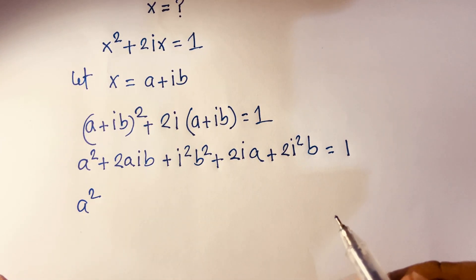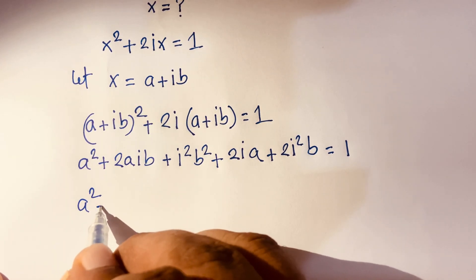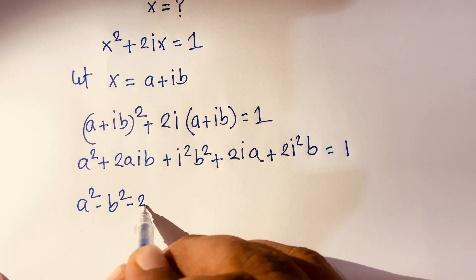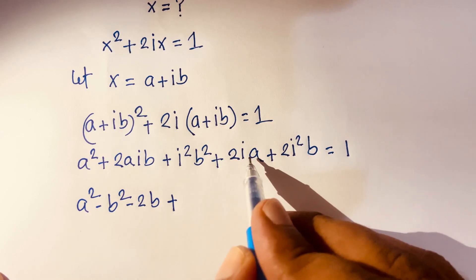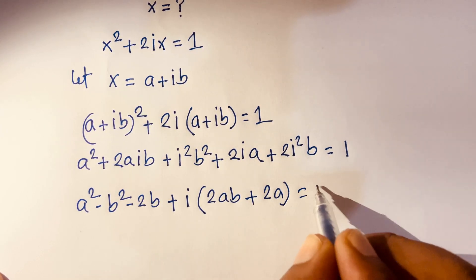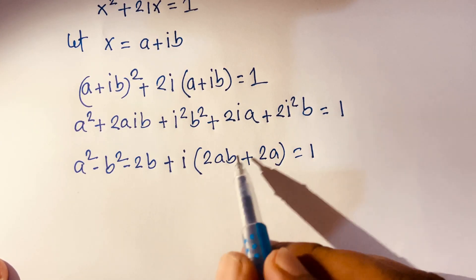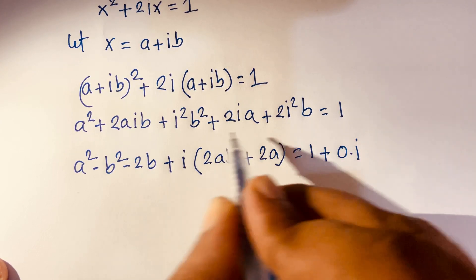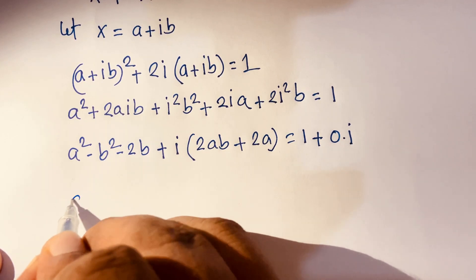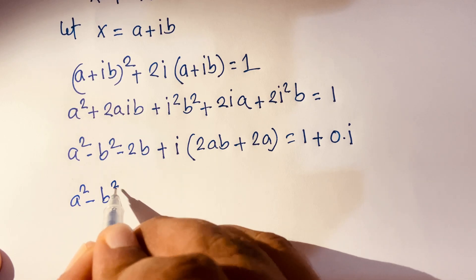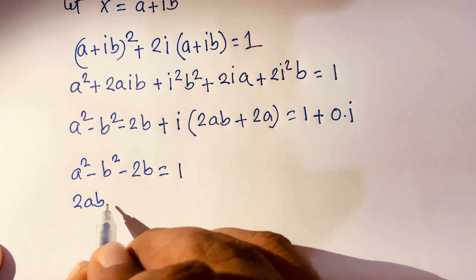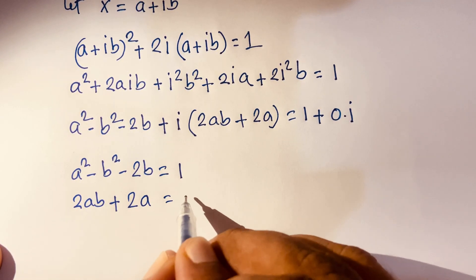Since i squared equals minus 1, the expression simplifies. The real part becomes a squared minus b squared minus 2b, and the imaginary part is i times (2ab + 2a). Setting this equal to 1 plus 0i, we compare real to real and imaginary to imaginary: a² − b² − 2b = 1, and 2ab + 2a = 0.